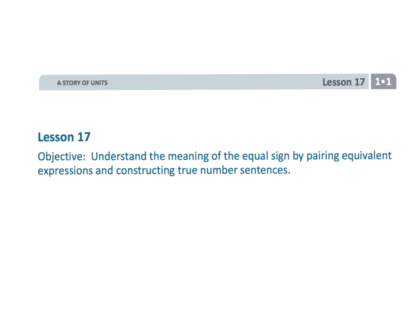That wraps up Grade 1, Module 1, Lesson 17, where we're beginning to focus on the equal sign. Ultimately, we're going to be understanding the commutative property.